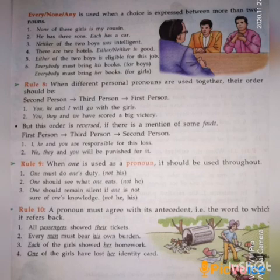Rule 9: When 'one' is used as a pronoun, it should be used throughout the sentence. Examples: 'One must do one's duty' — not 'his.' 'One should see what one eats.'